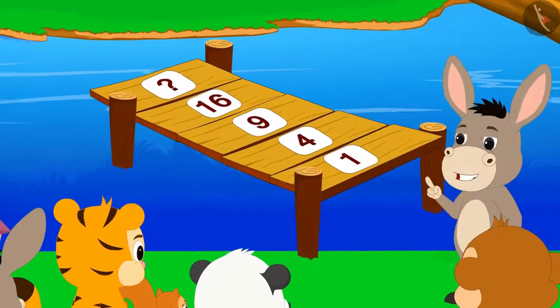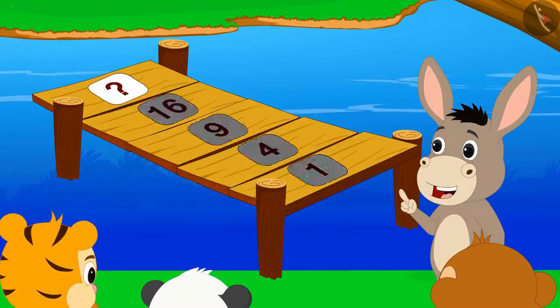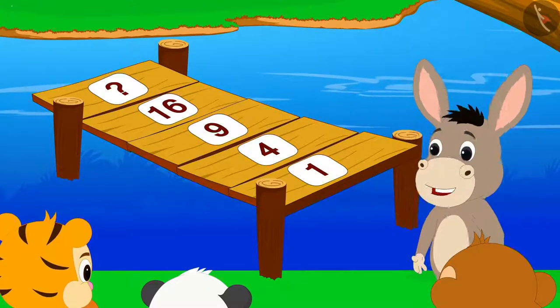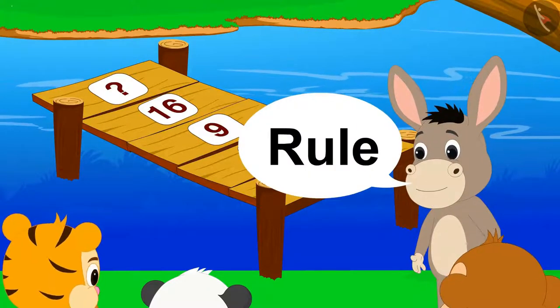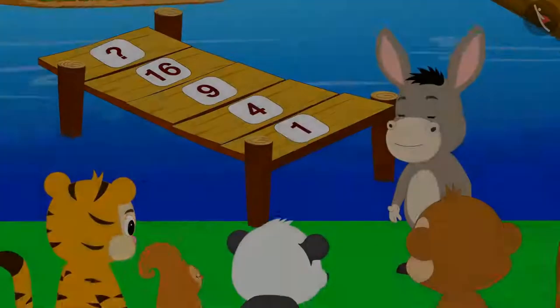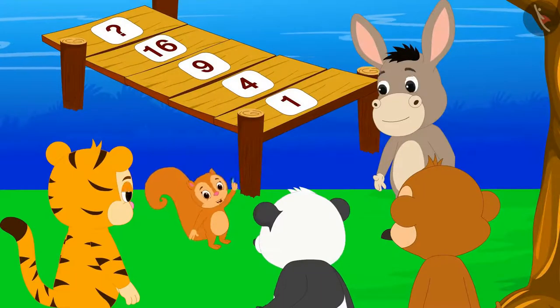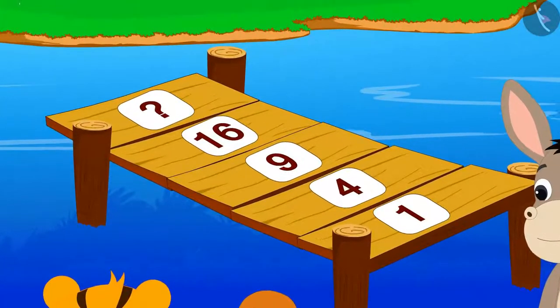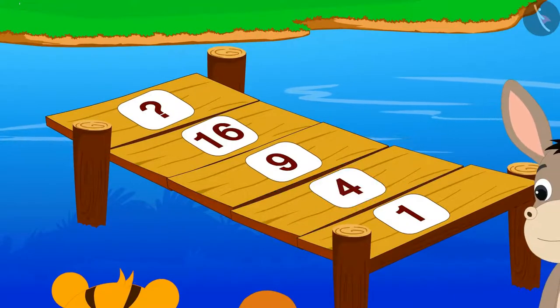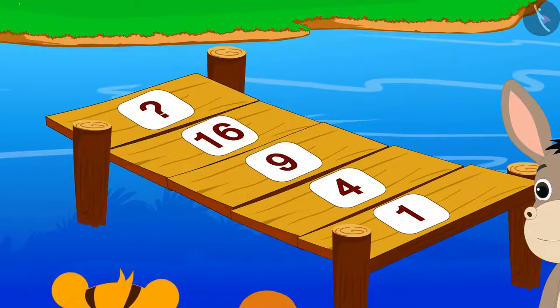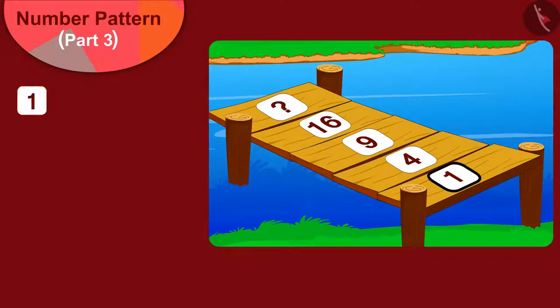"Look, there is a number written on every plank of this bridge. There will definitely be a rule between these numbers," Bola told the villagers. "One is written on the first plank of this bridge, four is written on the second plank, nine on the third plank, and sixteen on the fourth plank. We can write one as one times one, four as two times two, nine as three times three."